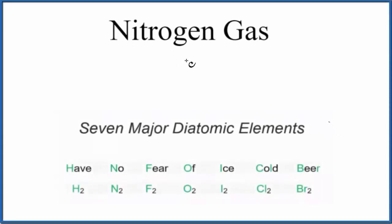In this video, we'll take a look at the formula for nitrogen gas. Simply put, the formula for nitrogen gas is going to be N2.